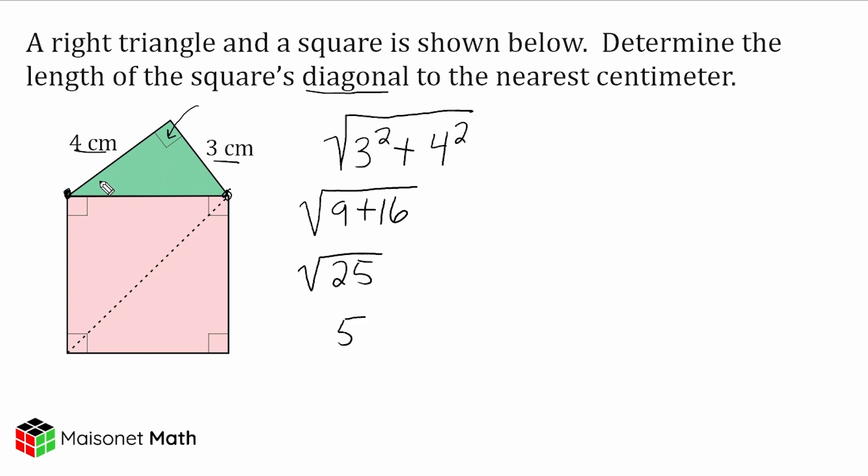So we know that this length right here is five centimeters, as is the other sides of our square, because a square is nothing but four equal sides that all form right angles. Now, what we can do now is we can just take a look at half of our square. Let's just look at this right triangle right here. And we have this leg right here, which is five and this leg right here, which is five.